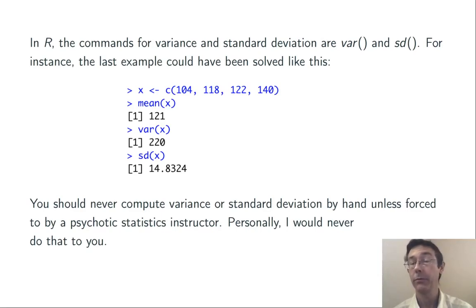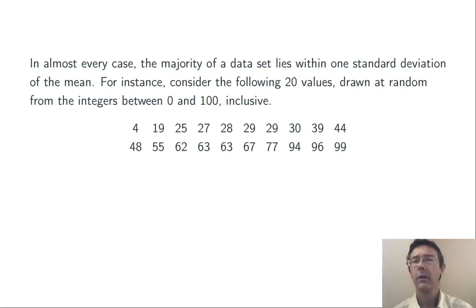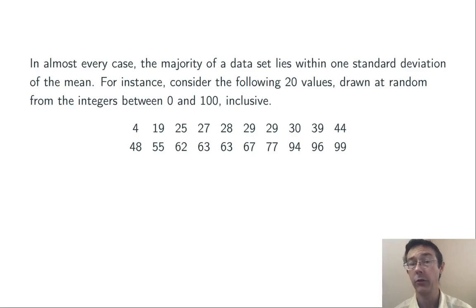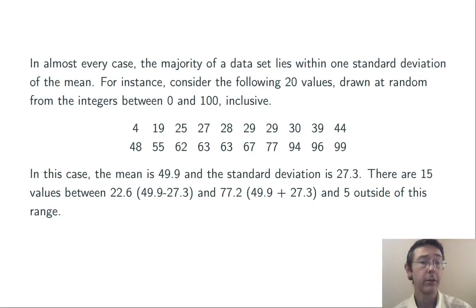Now, in nearly every case, the majority of the values in a data set will lie within one standard deviation of the mean — typically about two-thirds, although that can vary pretty widely. Here's a simple example: I drew 200 values at random from the integers between 0 and 100, each with equal probability. The mean of this data set is 49.9 and the standard deviation is 27.3. Going one standard deviation above and below the mean captures 15 of the 20 values, leaving five outside.